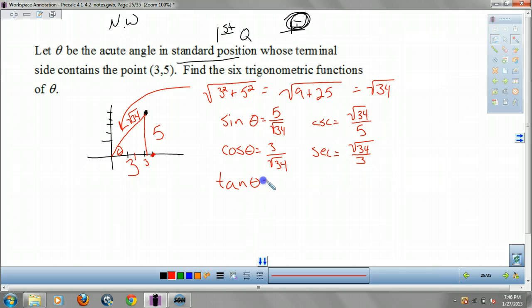Tangent of theta, that's your opposite over adjacent, 5 over 3. So cotangent is your reciprocal, 3 over 5.